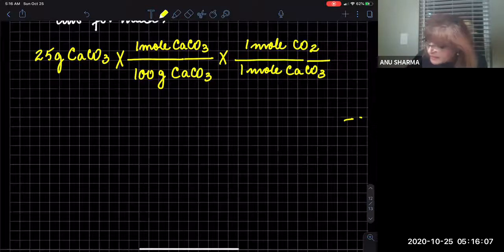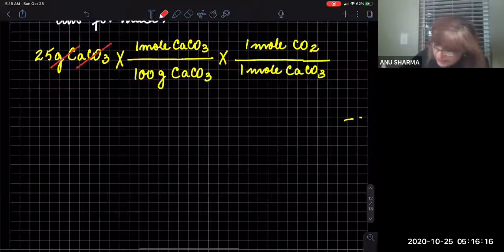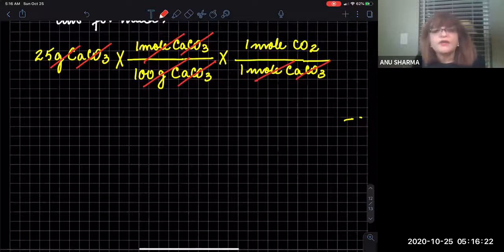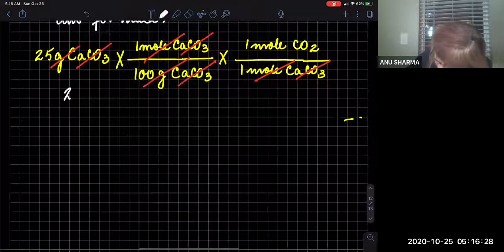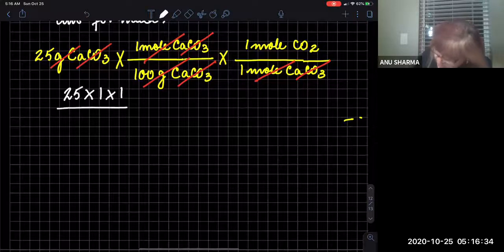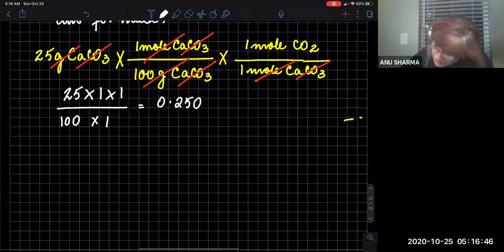If the ratio were different, those are the numbers you'd put in. We cancel the grams of calcium carbonate, the moles of calcium carbonate, and we are only left with moles of carbon dioxide. So the calculation is 25 × 1 × 1 divided by 100 × 1, which gives 0.250 moles of carbon dioxide.